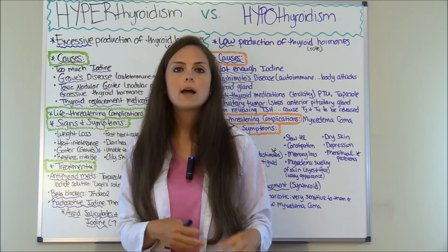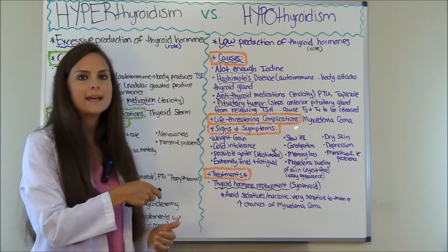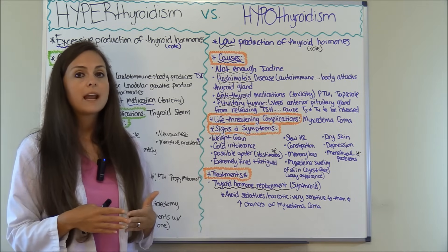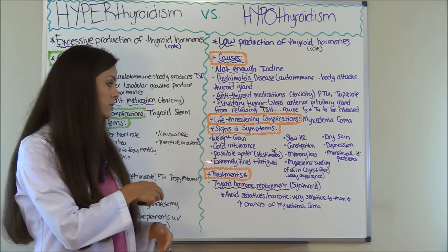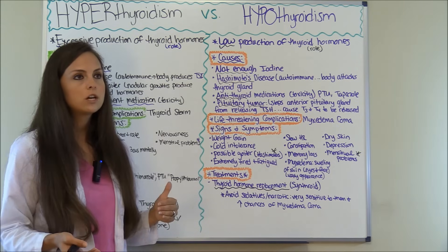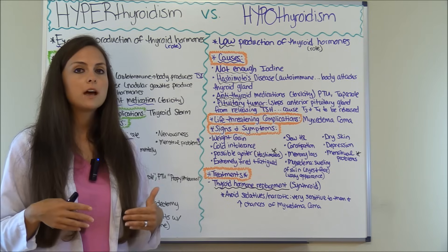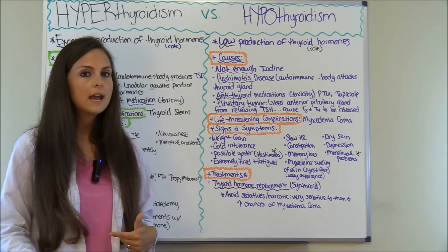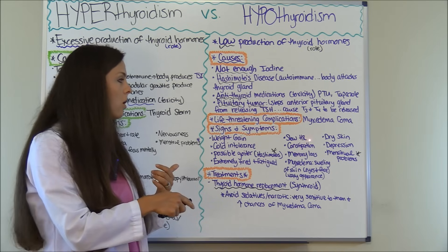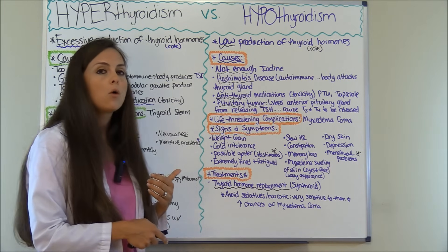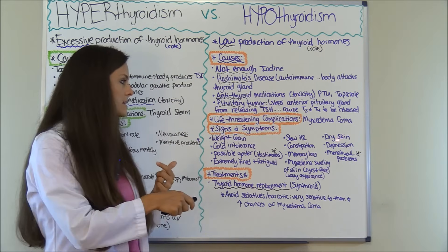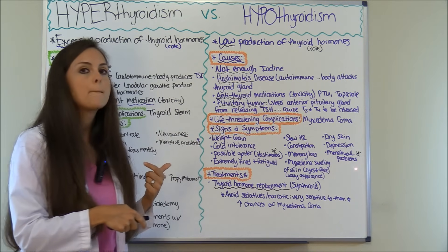In hypothyroidism, patients will have weight gain because they're not burning calories quickly. They'll be intolerant to cold, and in myxedema coma they can actually go into hypothermia because temperature is not being regulated. They may have a possible goiter, prevalent in Hashimoto's disease, due to the thyroid gland being constantly stimulated but not working, causing it to swell. They'll be extremely tired and fatigued, have a slow heart rate, constipation, memory loss, myxedema — which is a waxy appearance of swelling on the skin especially around the face and eyes — dry skin, depression, and menstrual problems.